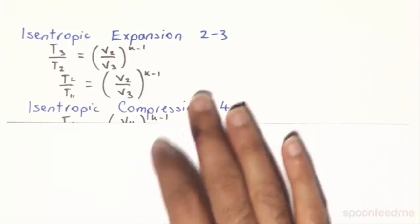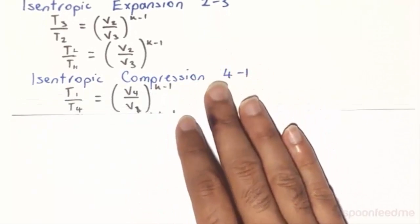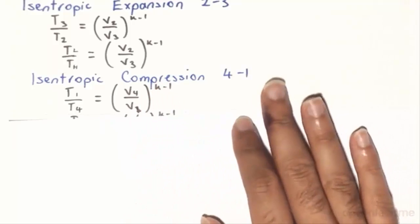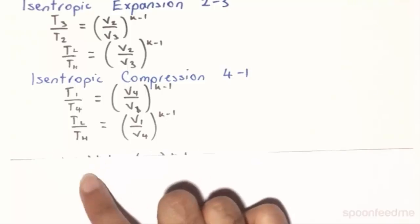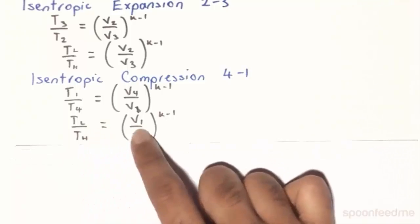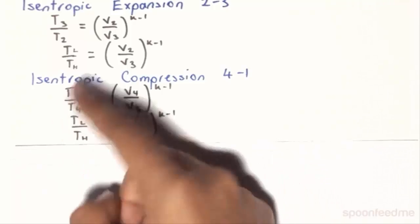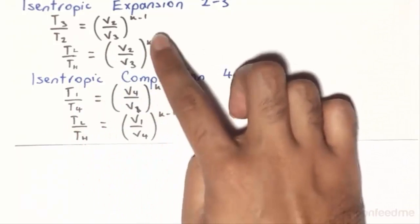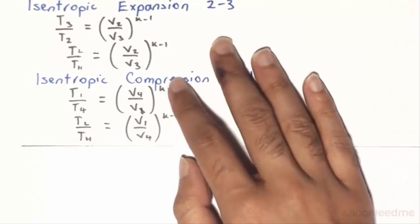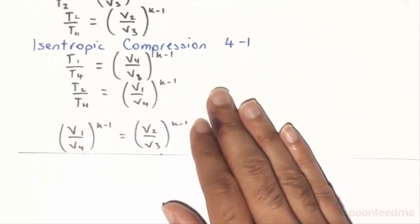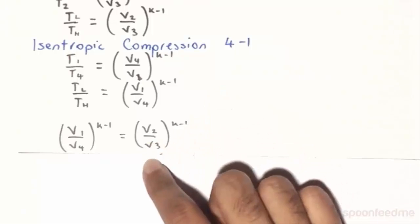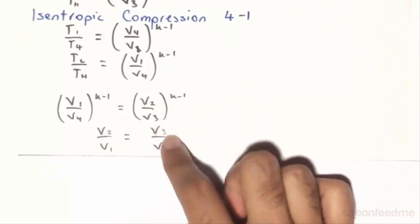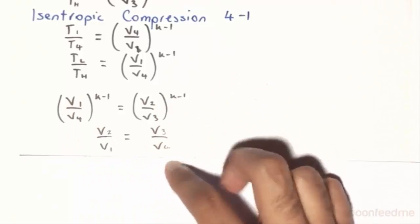Now, if you look at the isentropic compression in process 4-1, we have T1 on T4 is equal to V4 on V1 to the power of K minus 1. So rearranging, we have TL on TH is equal to V1 on V4 to the power of K minus 1. So if we equate these two expressions that we have found, we will find that V1 on V4 to the power of K minus 1 is equal to V2 on V3 to the power of K minus 1. So therefore, it follows that V2 on V1 is going to equal to V3 on V4.